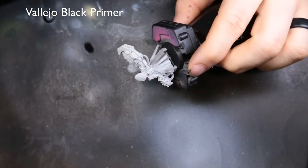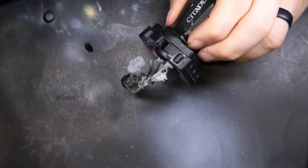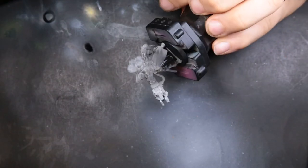First we're going to be coming through with Vallejo Black Primer. A lot of this model is black so we want to lay in some of this already just to get our work started for us.